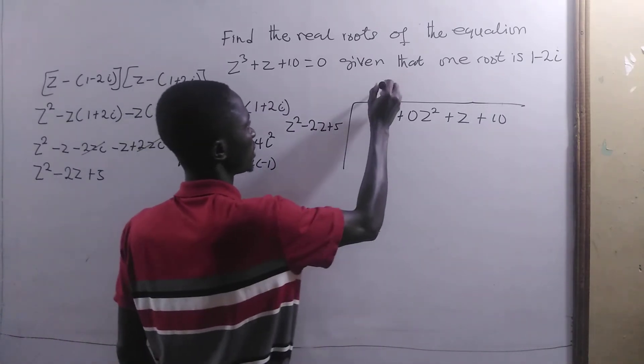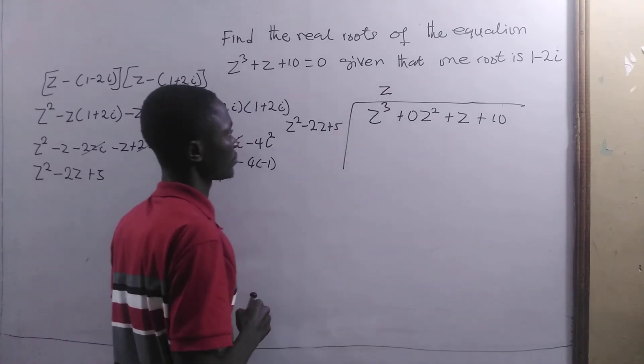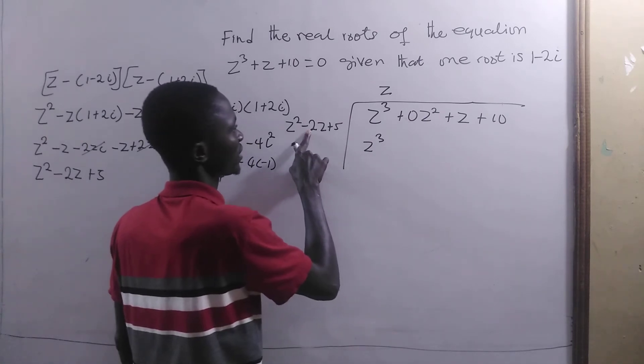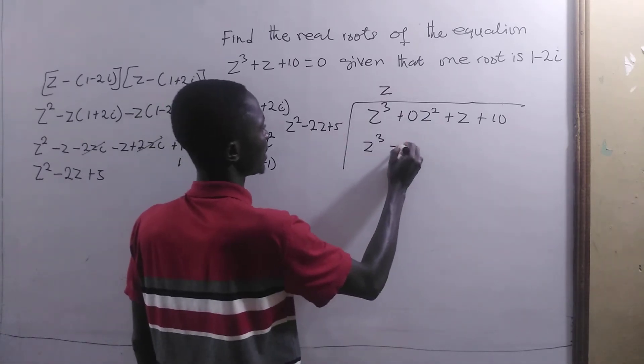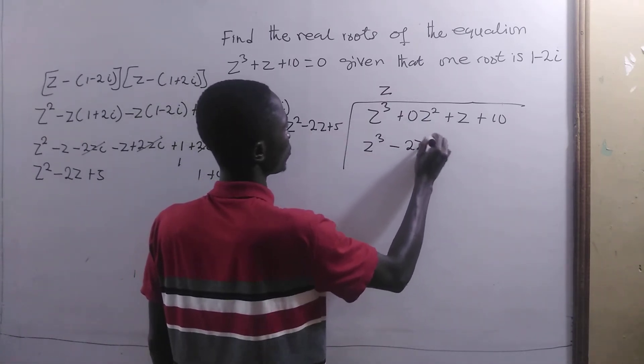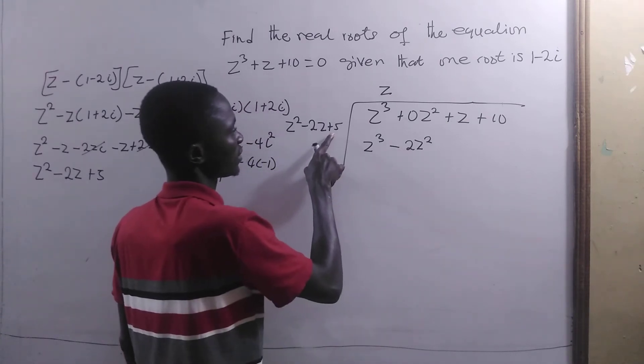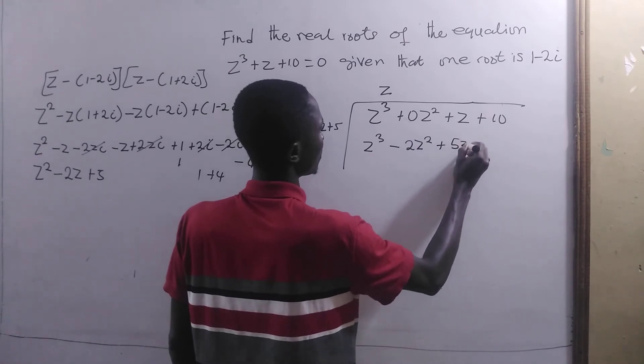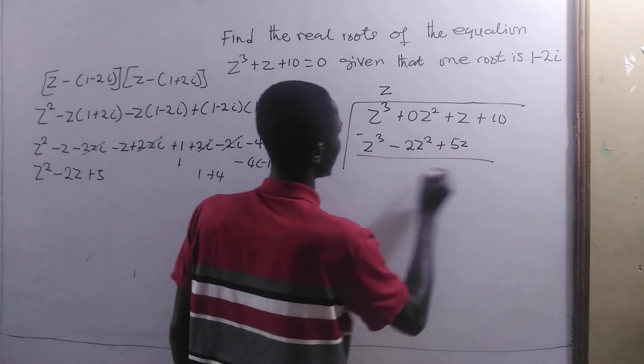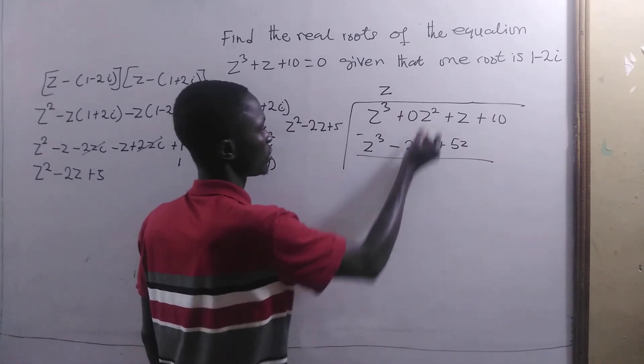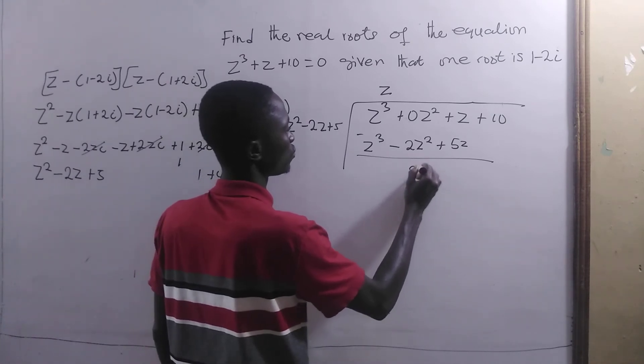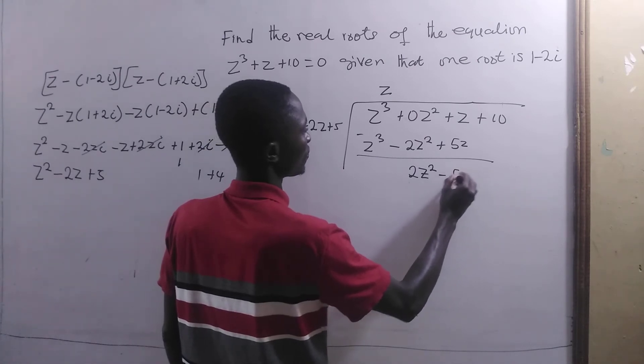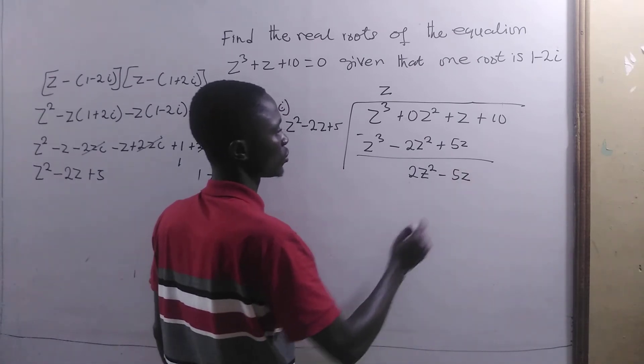z² will go into this z. z times z² will give us z³. This times that will give us -2z², and 5 times z will give us +5z. If we subtract, we get this to zero, positive 2z² - 5z, sorry, -4z.